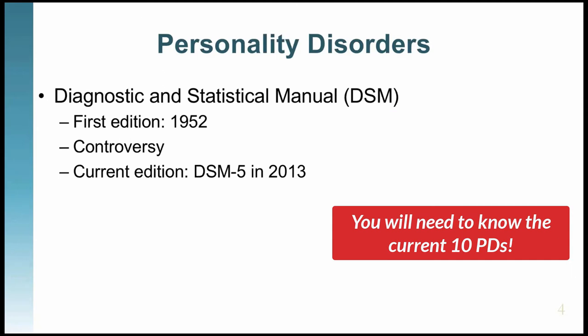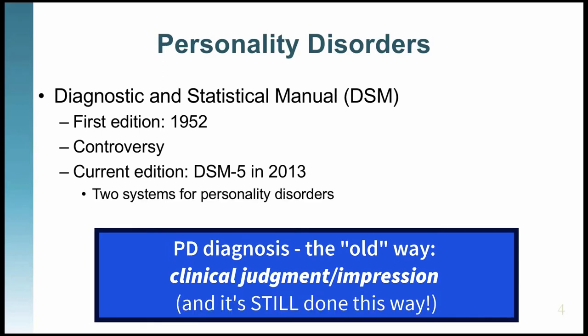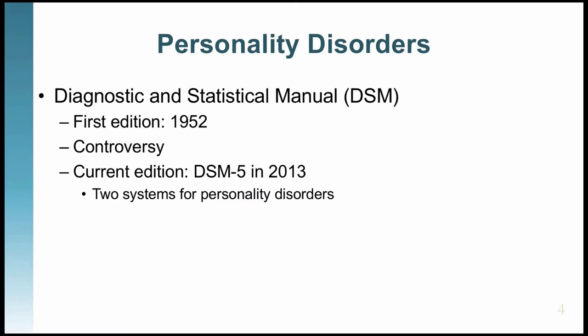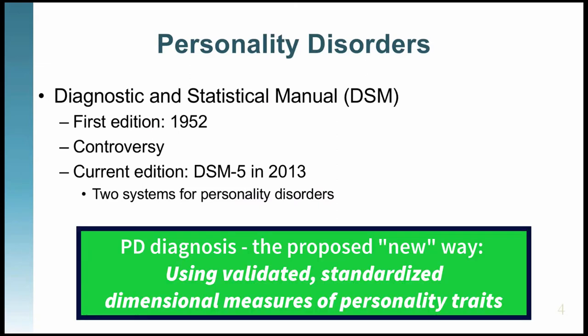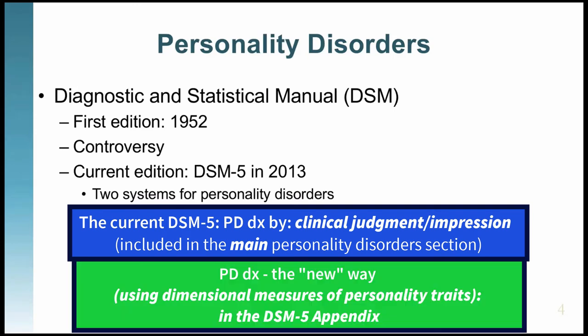There are now two systems for diagnosing personality disorders. The old way is that the clinician makes a decision as to whether a person has a disorder and which one or ones they have. The second way is to do assessment with standardized personality tests. Both are in the DSM-5 — the clinical impression diagnosis method is in the main section, and the dimensional assessment method is in the appendix.